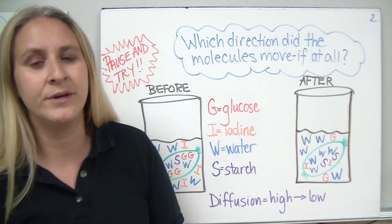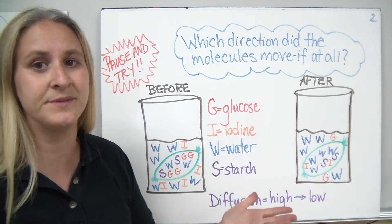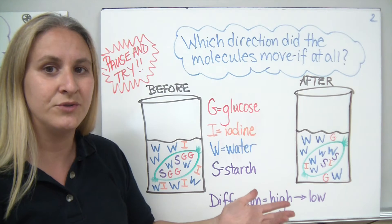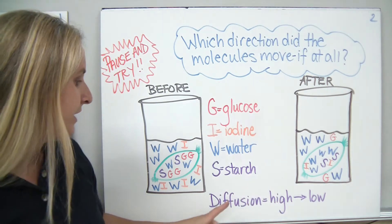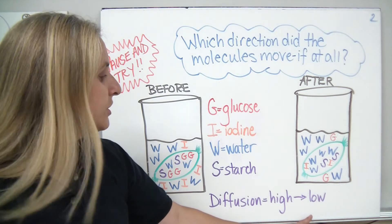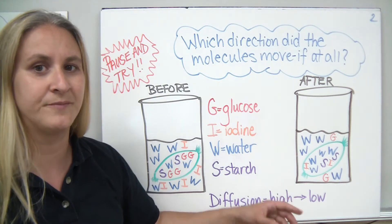So in our diffusion lab, we were testing to see which substances can move through a cell membrane by diffusion, which means they're not going to be using any energy, and we remember that diffusion goes from an area of high concentration to an area of low concentration.